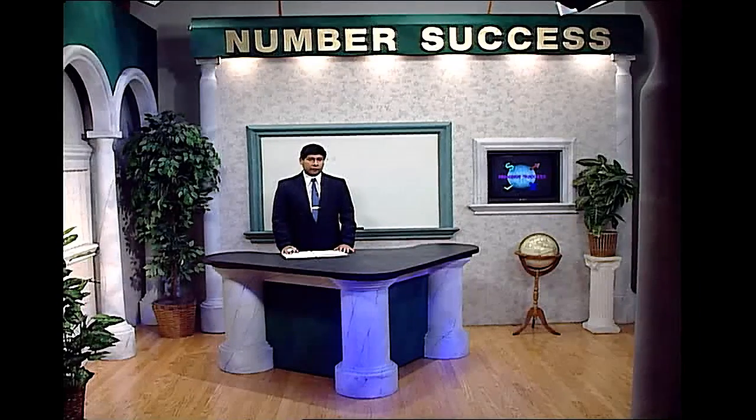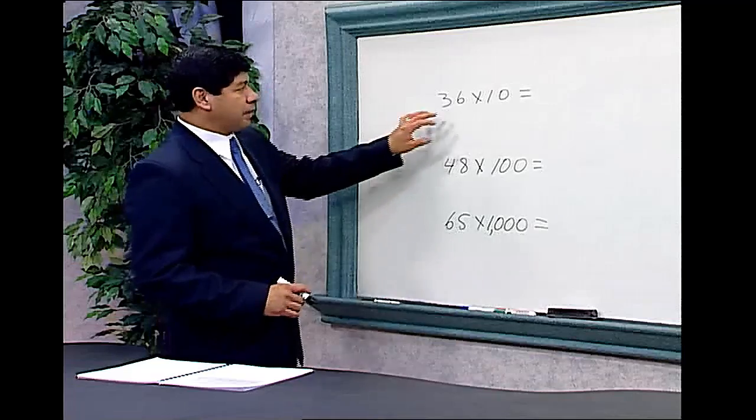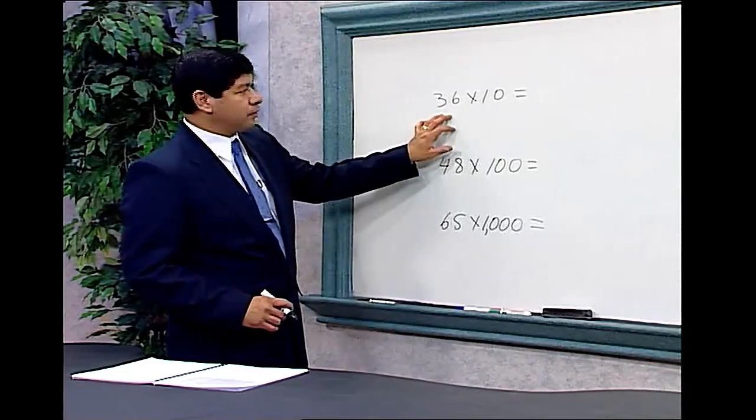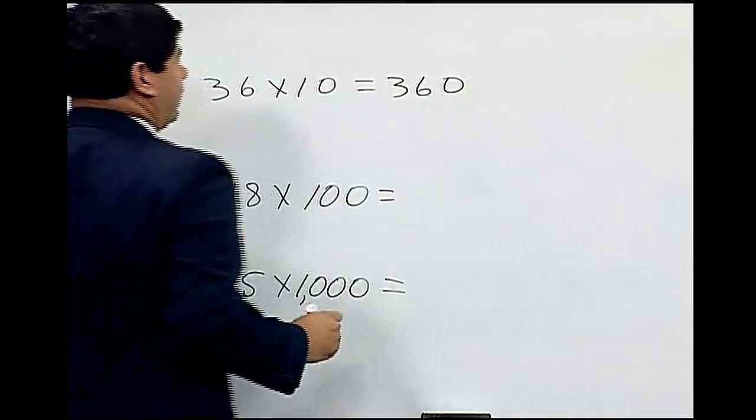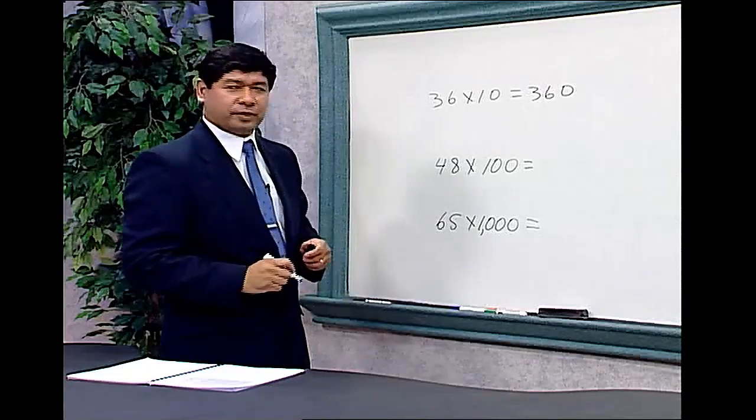Multiplying by 10, 100, and 1,000. To multiply by 10, all we need to do is add a 0 to the right of the number. So we have 36 times 10, 36, and add the 0. So 36 times 10 is 360.